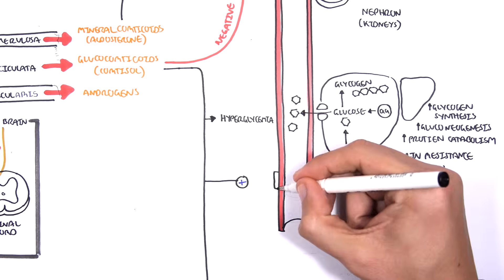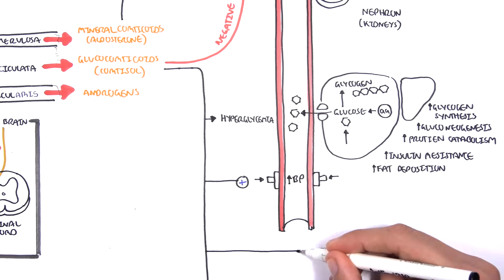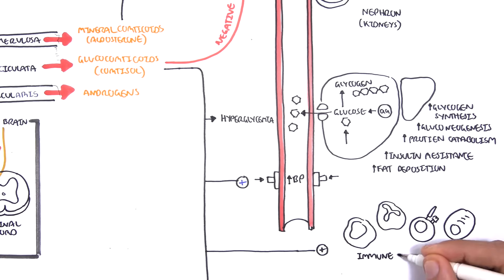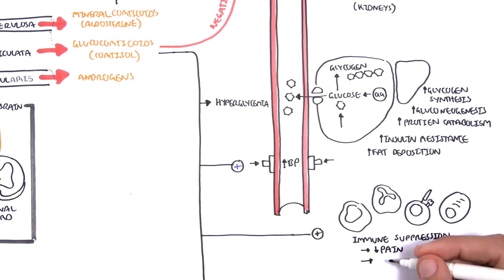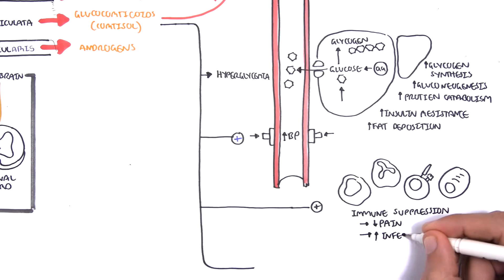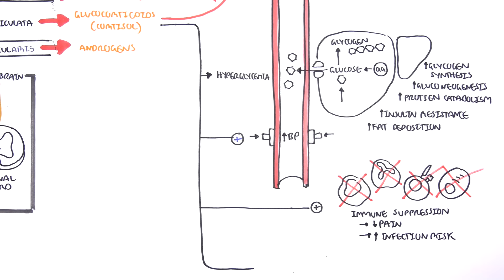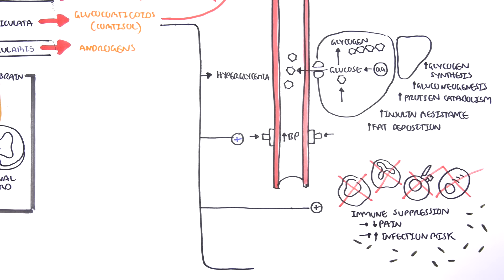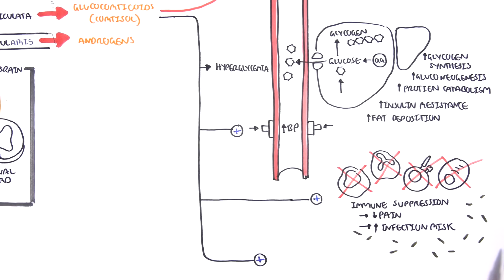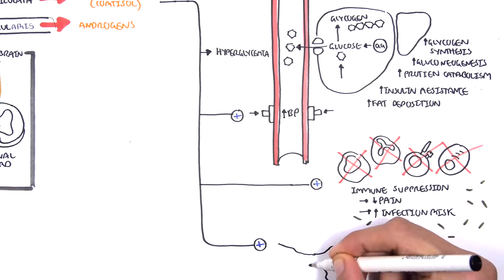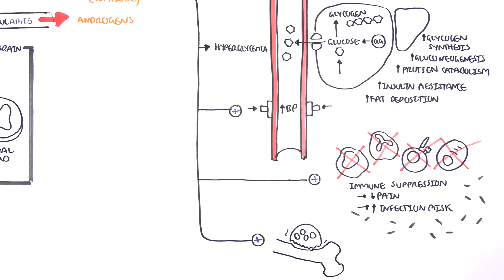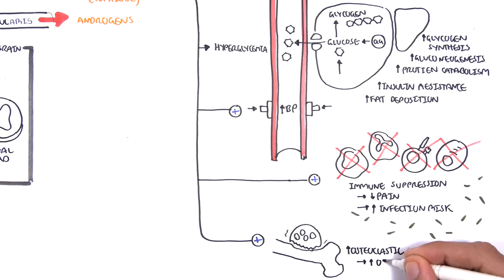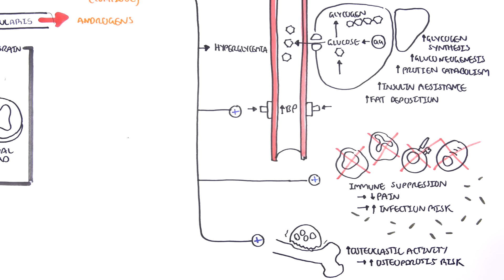Glucocorticoids also increase blood pressure and suppress the immune system. Immune suppression helps decrease pain sensation, but at the same time increases the risk of infection, as immune cells are unable to defend our body. Finally, glucocorticoids stimulate osteoclastic activity in the bone, leading to osteopenia and increasing the risk of osteoporosis, and thus increasing the risk of bone fractures.